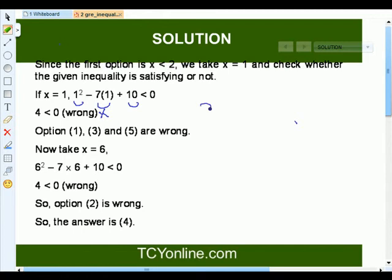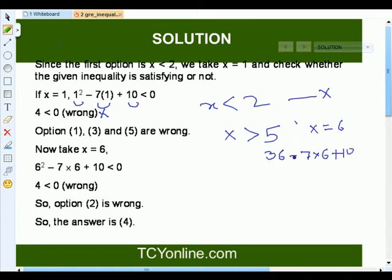Hence, x less than 2 is not our answer. Now, let's talk about option number third. That is, x is basically greater than 5. For this, let's take x equals to 6. So, when we plug in 6, we get 36 minus 7 times 6 plus 10.